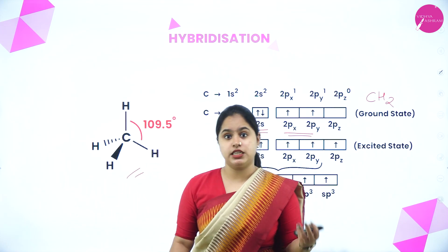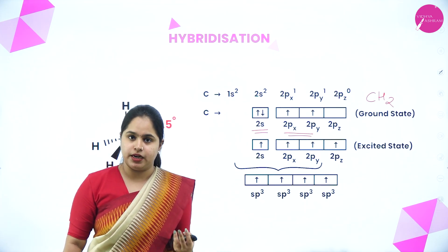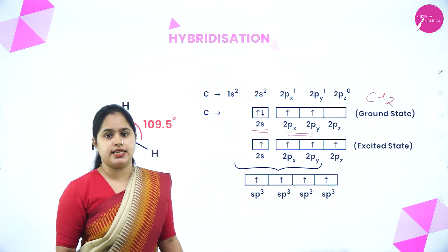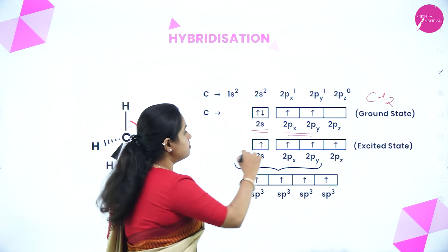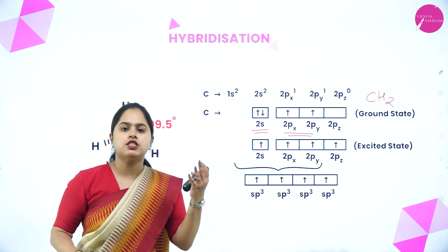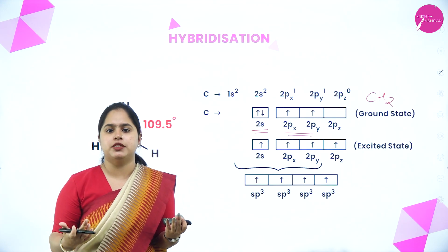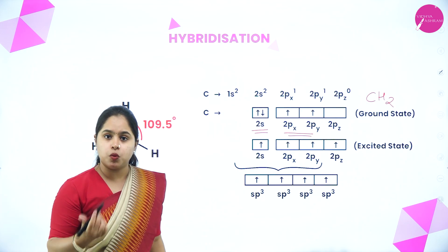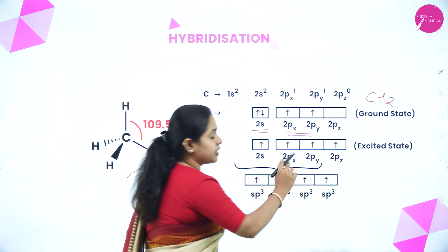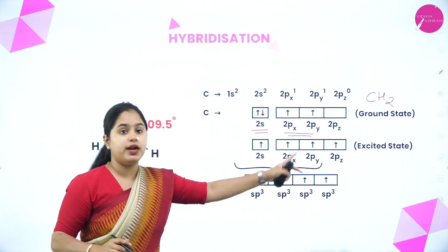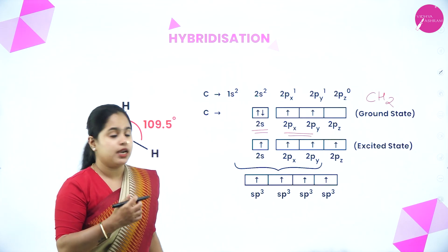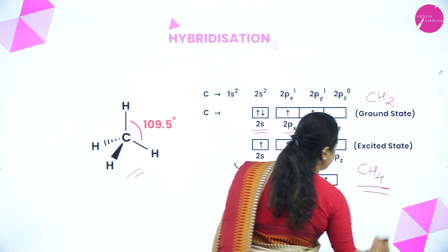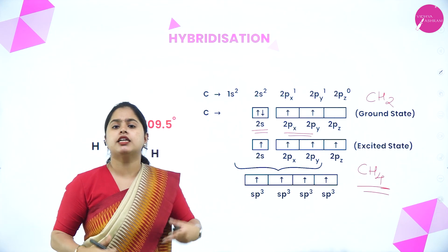The actual molecule we know is CH4. In the excited state, one electron from the 2s orbital jumps to the 2p orbital. Even though there is a very small energy difference between 2s and 2p, this shift occurs — giving one unpaired electron in 2s and one unpaired electron each in 2px, 2py, and 2pz. Now according to VBT, CH4 can be formed. This process is called hybridization.